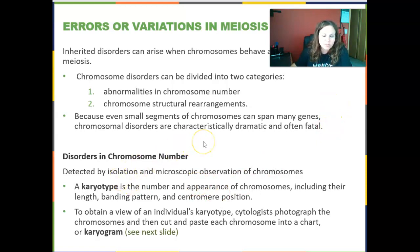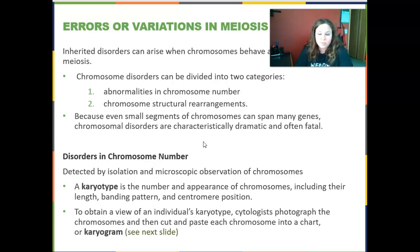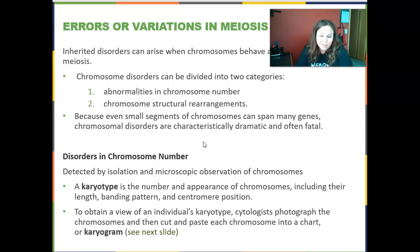Chromosome disorders can be divided into two categories: abnormalities in the number of chromosomes, or structural rearrangements. Because even small segments of chromosomes can span many genes, chromosome disorders are often dramatic and sometimes fatal — the fetus may not develop from a fertilized egg or sperm with such an error. Disorders in chromosome number can be detected before birth using a karyotype — the number and appearance of chromosomes, including their length, banding pattern, and centromere position.